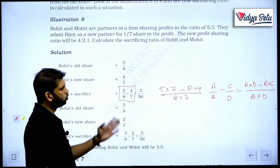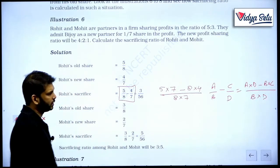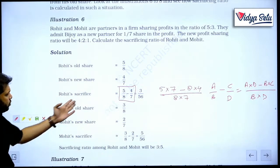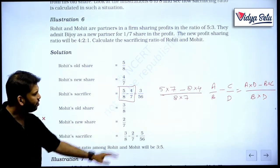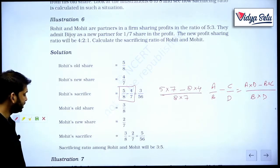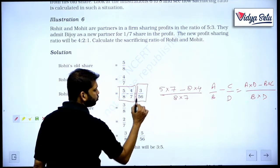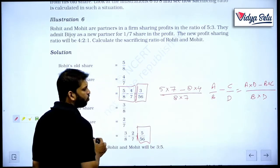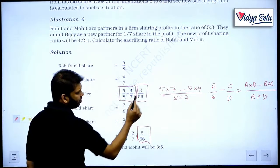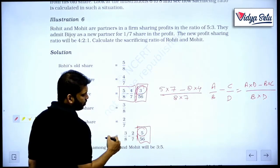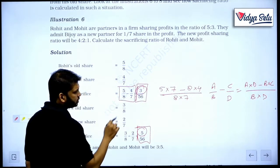So if you do this, 35 minus 32 upon 56, so 3 upon 56. Mohit's old share was 3 upon 8, new share is 2 upon 7. So if we solve this, comes to 5 upon 56. So now let's see sacrificing ratio. This is the fraction of sacrifice, this is what, out of total their profit, this is the fraction. If we want to know the ratio of their sacrifice, the ratio is 3 is to 5.